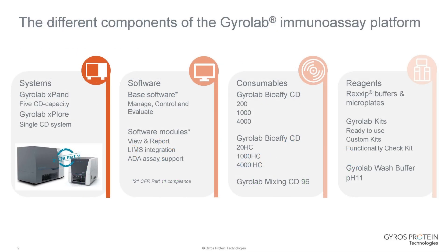There are many different components of the Gyrolab immunoassay platform, starting with the instruments. We currently have two instruments: the Gyrolab xPand, which is a five-CD instrument, and the Gyrolab xPlore, which is a single-CD instrument. Both are very equivalent to each other, so assays developed on one can be transferred to the other. They both have the same run time of approximately one hour per assay.